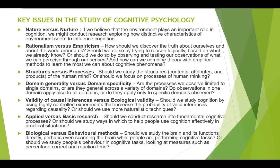Key issues in cognitive psychology: Nature versus nurture — if environment plays an important role in cognition, we might explore how distinctive characteristics of environment influence cognition. Rationalism versus empiricism — should we discover truth by reasoning logically from what we already know, or by observing and testing what we perceive through our senses? Structures versus processes — should we study the structures, contents, and products of the mind, or the processes of human thinking? Domain generality versus domain specificity — are the processes we observe limited to single domains or general across many?